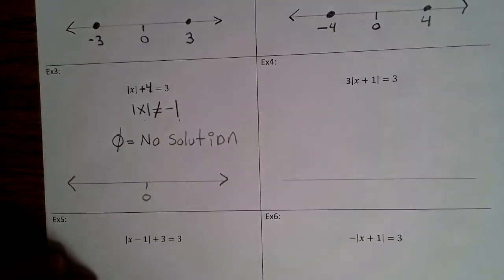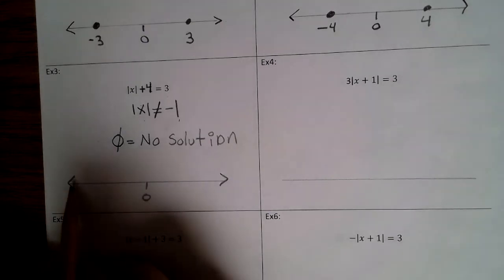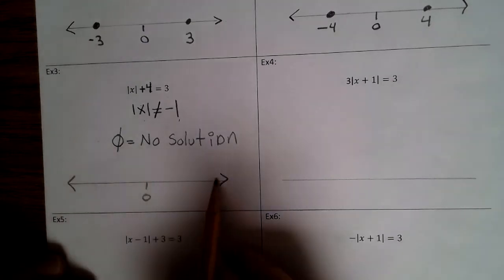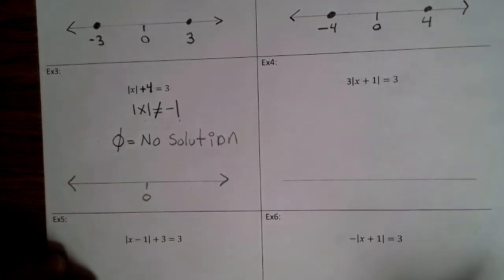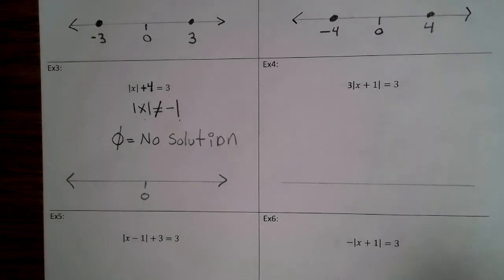When you graph the solution, there are no points on the number line. Finish up example 3.